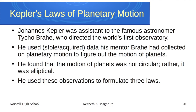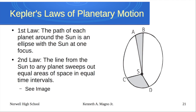Kepler used his observations to formulate three laws about planetary motion. The first law was that each planet goes around the sun in an ellipse, with the sun at one of the foci. There's one real focus and one imaginary focus opposite it, but the sun is the main focus of the orbit.